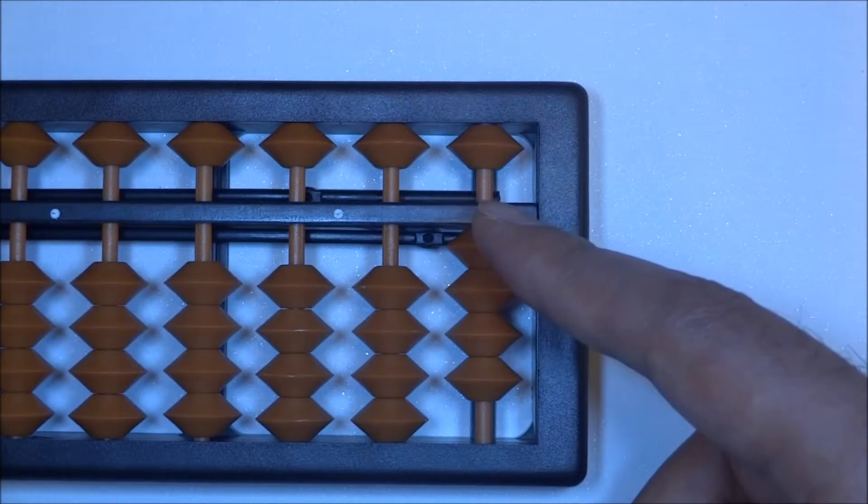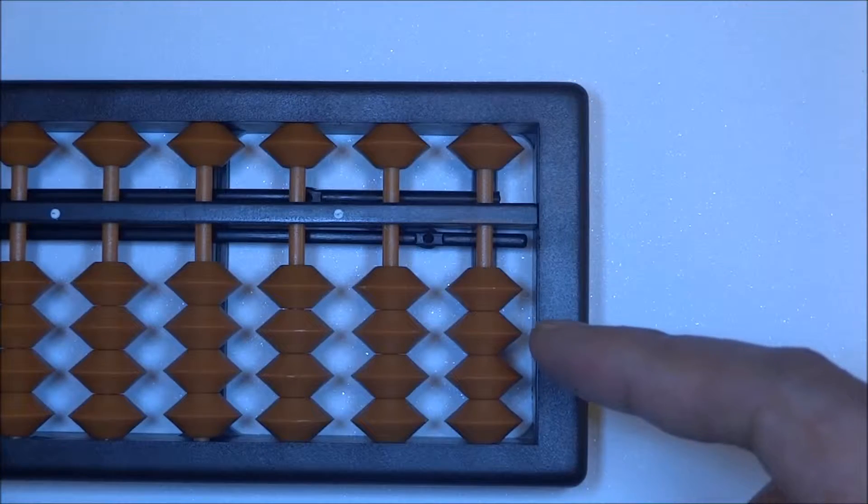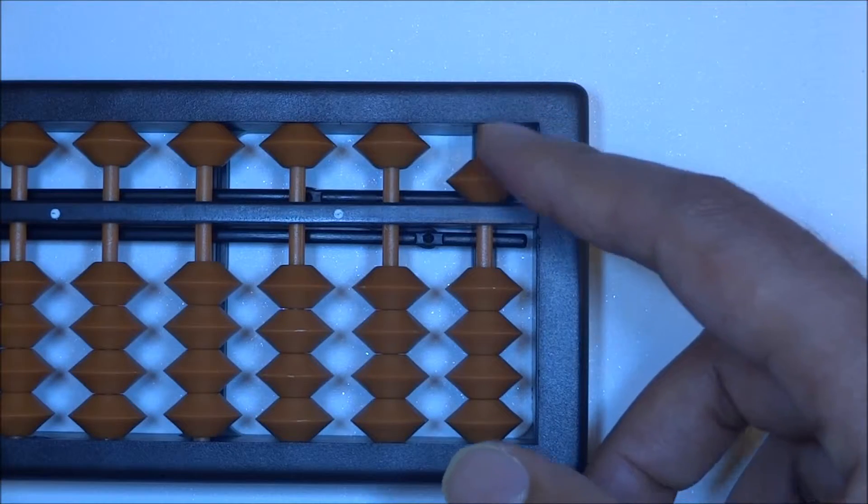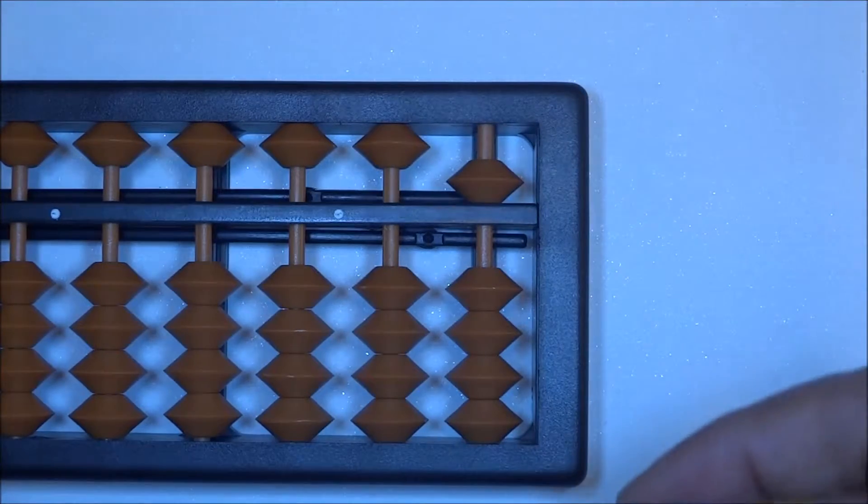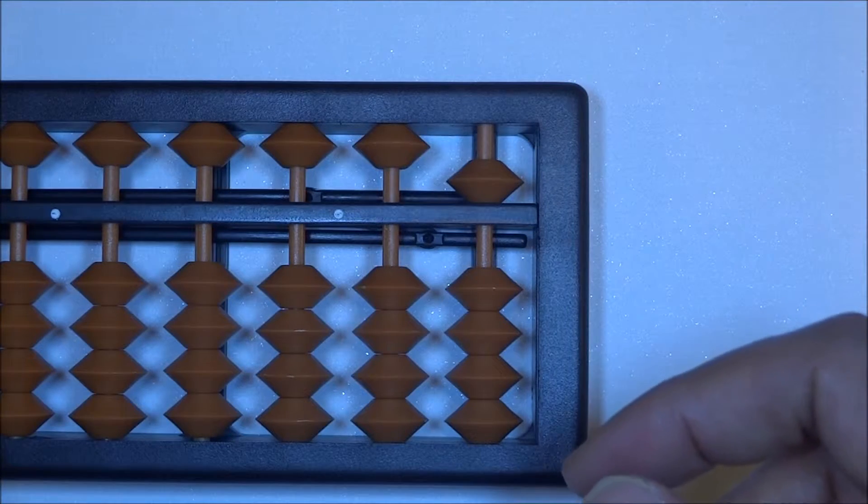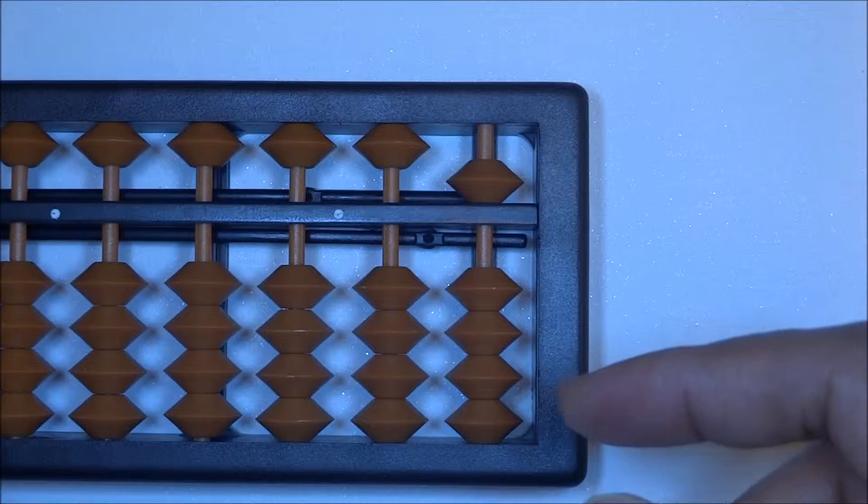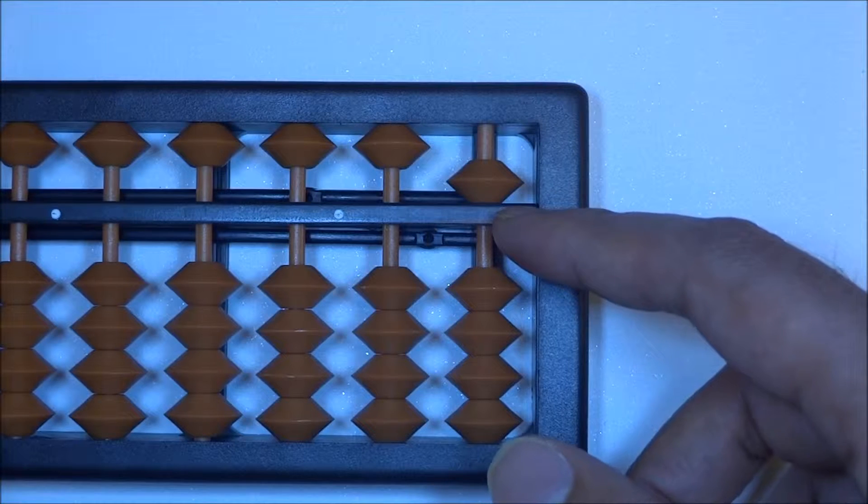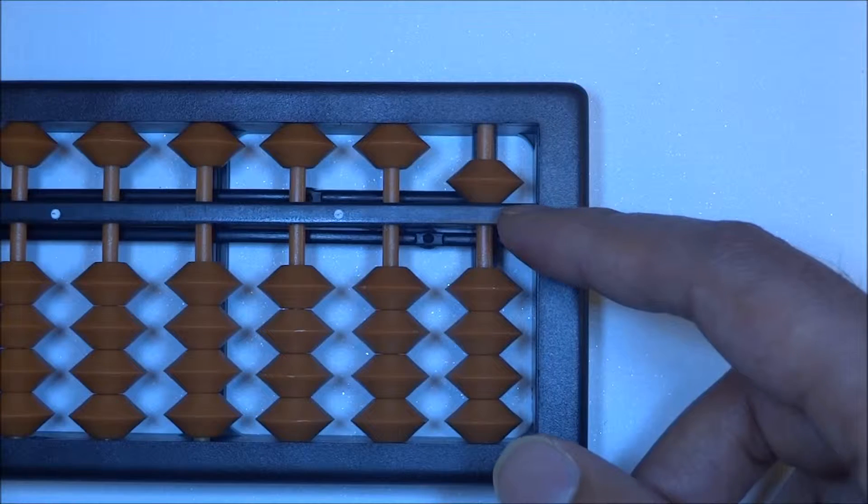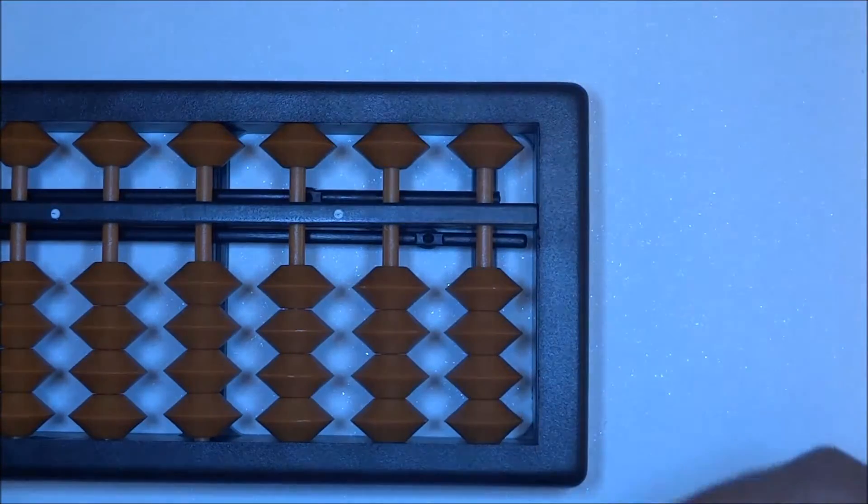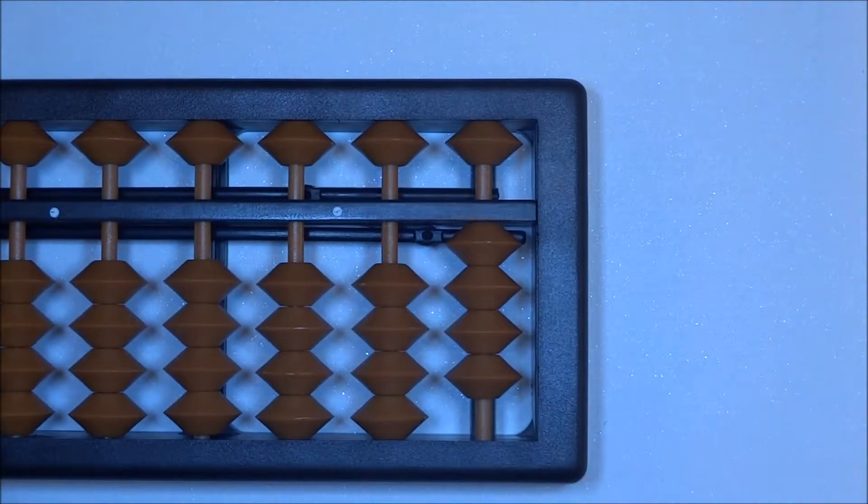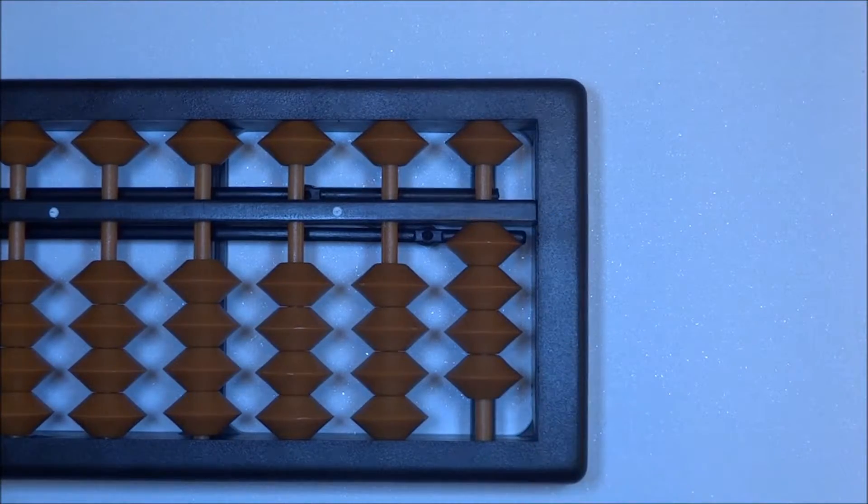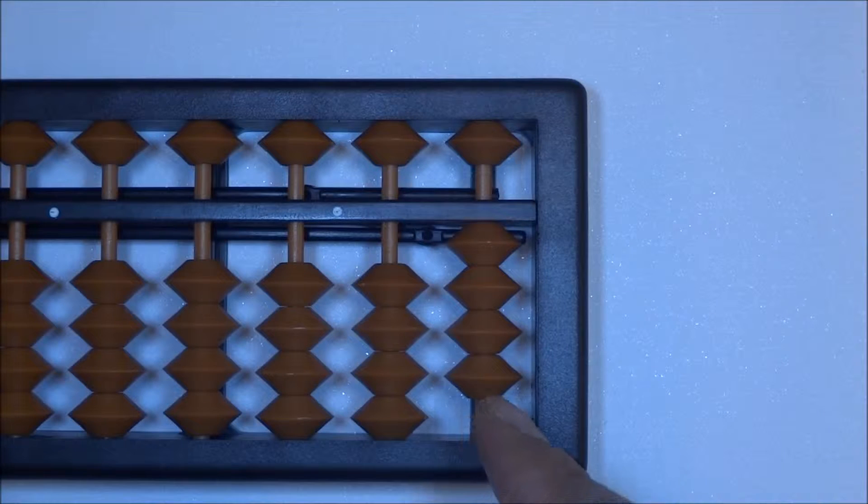Now let's reset it once again. In terms of five, the heavenly bead, so technically we're moving it down but since we are moving it towards the beam, we still call it up five. Now in terms of resetting it, moving it away from the beam, we would call it down five. Up four. Now when we are in this situation when we are representing four, we say down two.